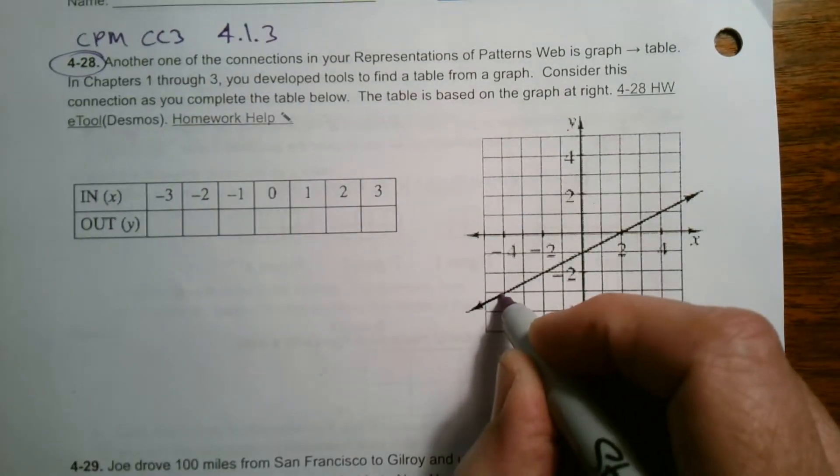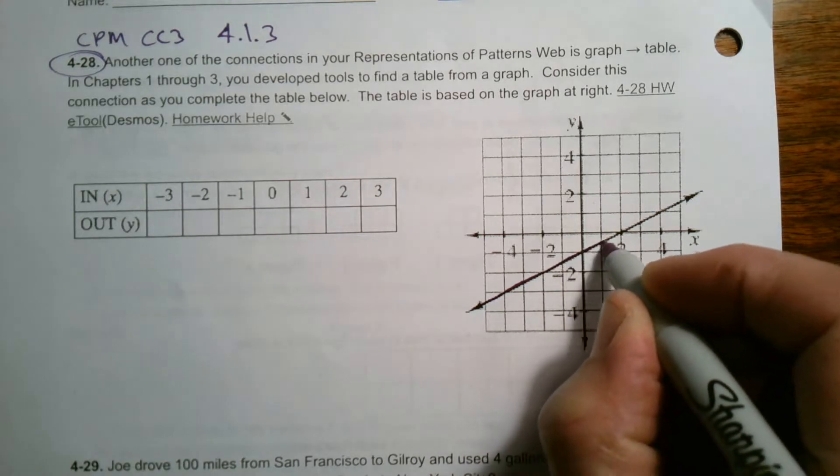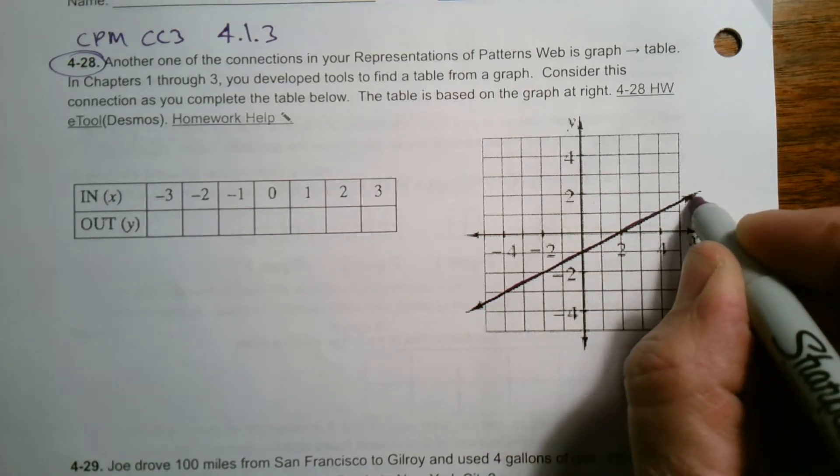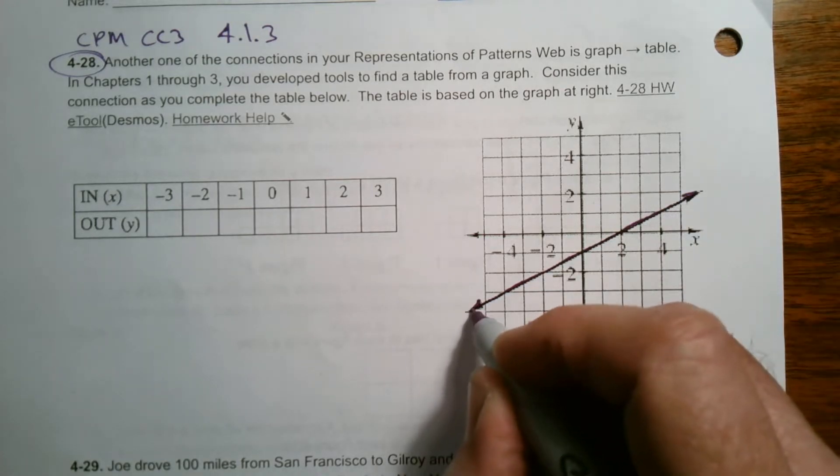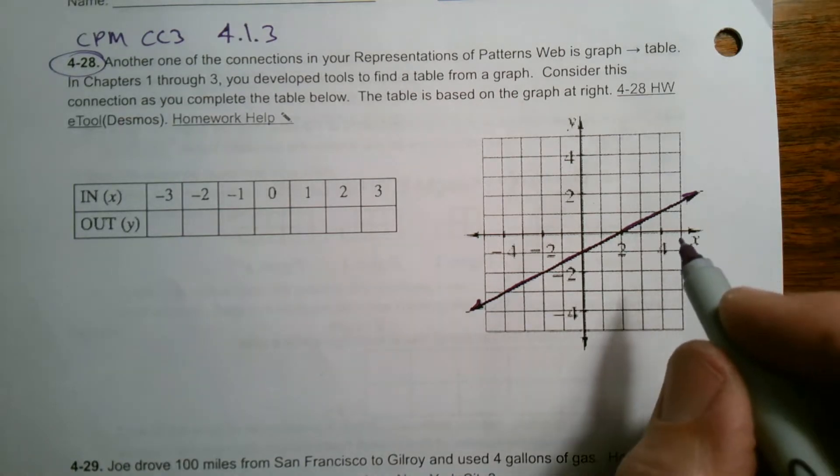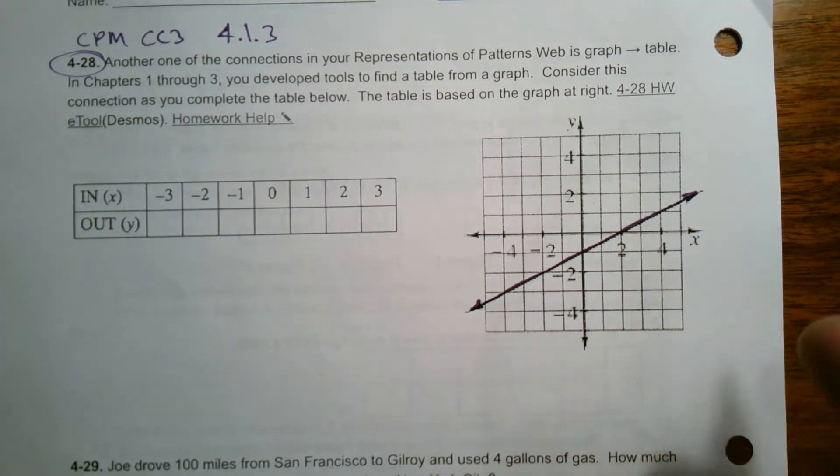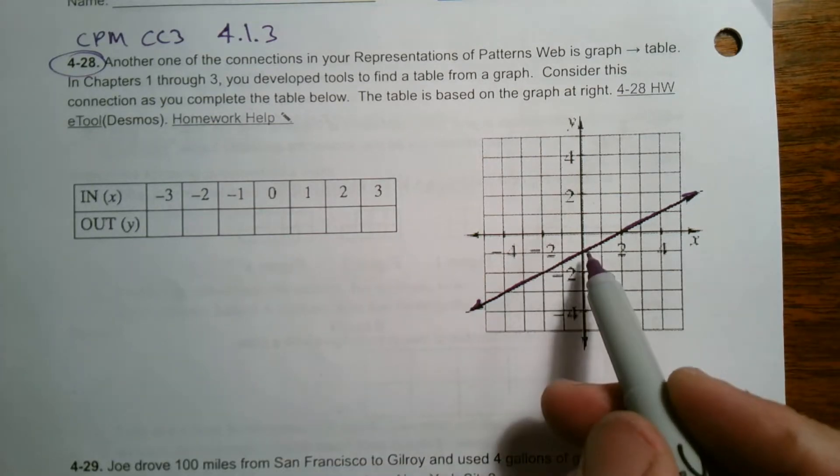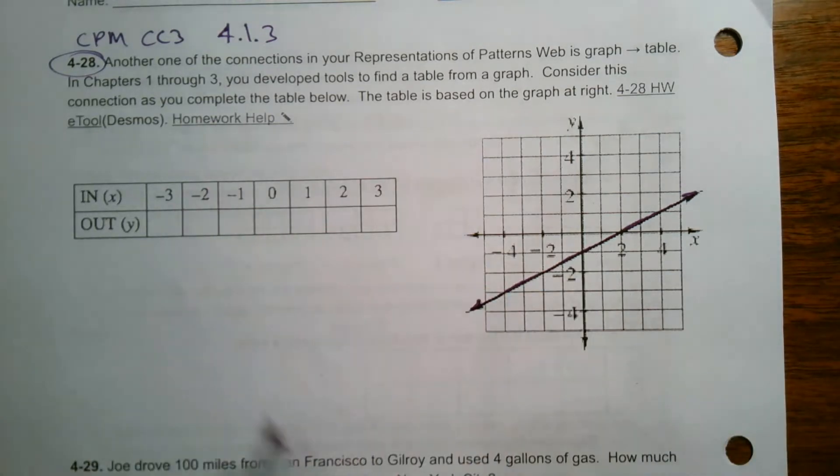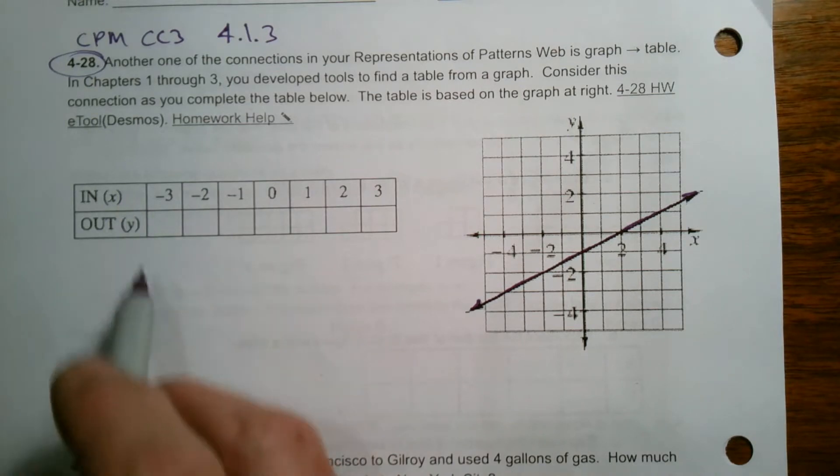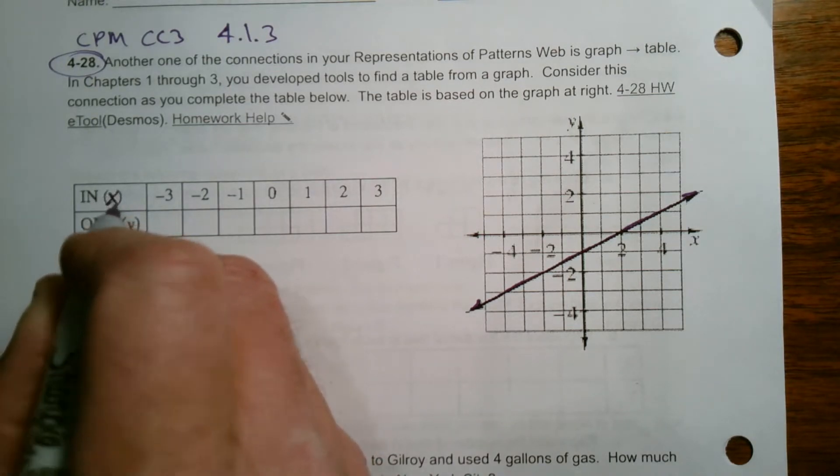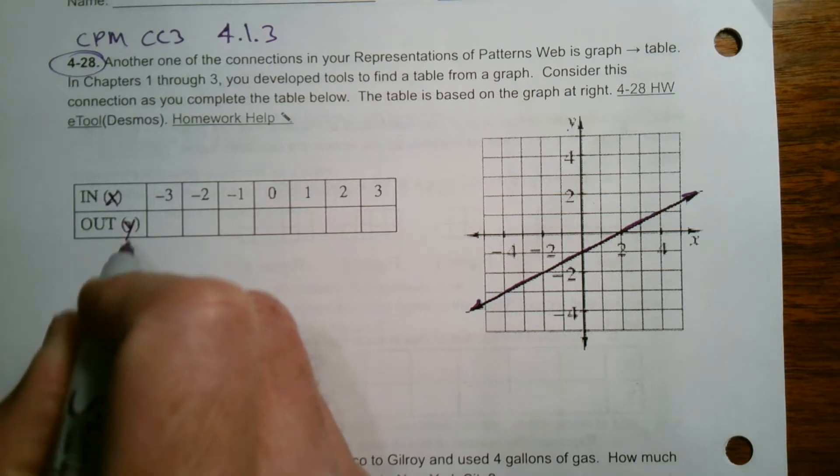I've got this line here. This line represents solutions to an equation. Remember, it represents all the solutions to an equation, a rule. So I want to take those solutions now and put them within the context of a table. Your input is your X values, your output is your Y values.